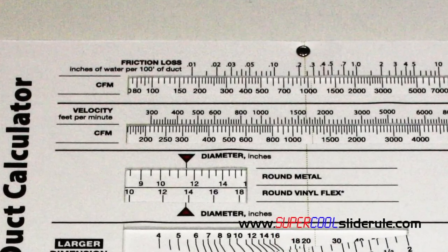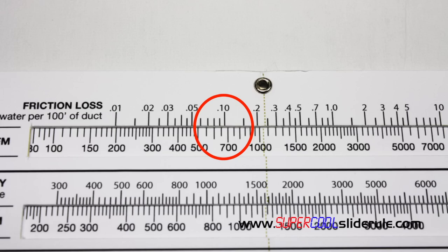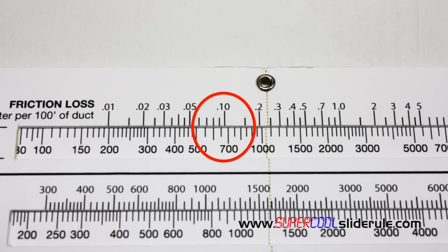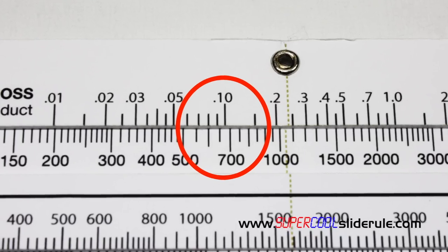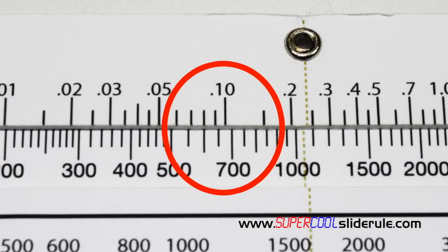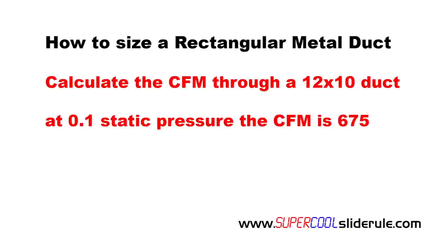Next we need to know what our desired static pressure is. In this example we will use 0.1 as our static pressure. I chose this number because this is a very popular static pressure for the supplier of many air conditioners in use today. We locate our static pressure of 0.1 right here. Directly under this number we will see 675. So our CFM through 12 by 10 duct at a 0.1 static pressure is 675.